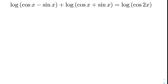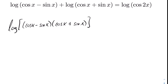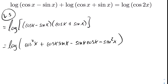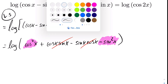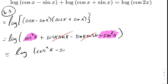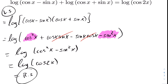For our final example, we want to prove a trig identity involving logarithms. Starting with the left hand side, the assumed base is 10. Since we're adding two logarithms with the same base, we can change this to multiplication. Expanding what's inside the logarithm, we get cancellation on the cos x and sin x terms, leaving cos²x − sin²x.